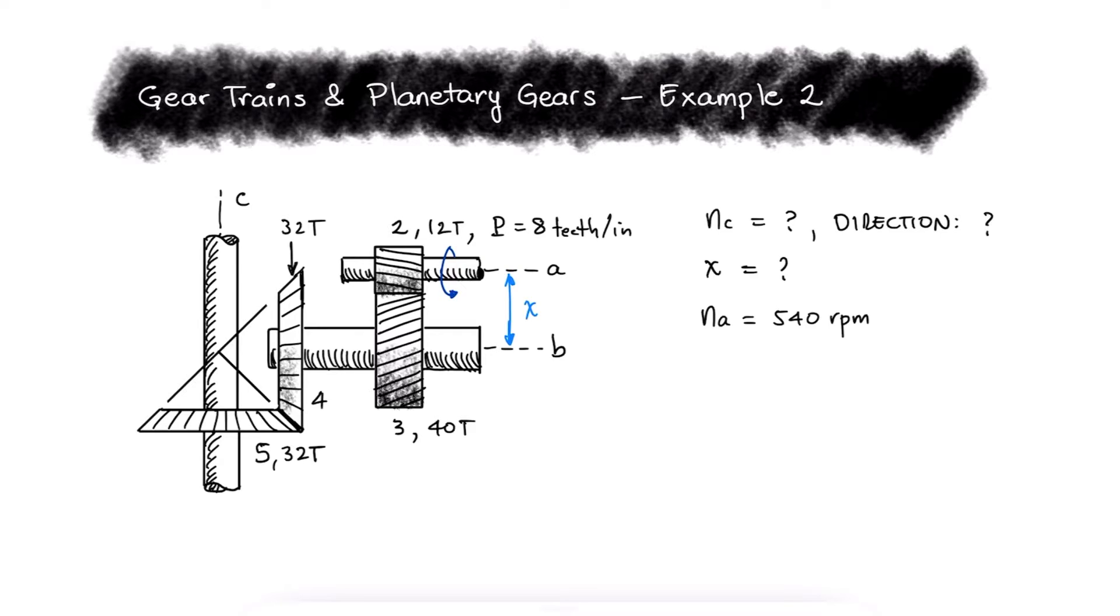We'll start with the direction of the rotation of shaft C. The front face of gear 2 is moving down and therefore the front face of gear 3 is moving up. Gear 4 is on shaft B with gear 3 and is therefore also moving up.